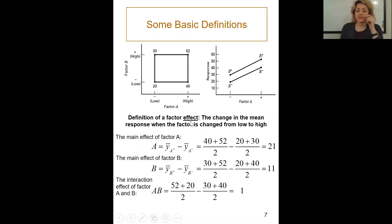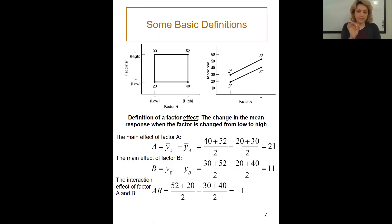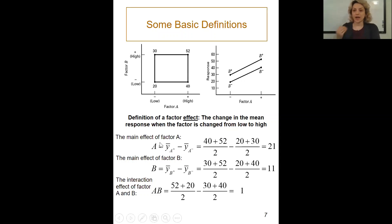Now here is the definition of a factor effect. It's super important — whenever we want to find the betas for each variable or their interactions, we first need to understand what 'effect' means. The effect is the change in the mean response when the factor is changed from low to high. We have main effects and interaction effects.